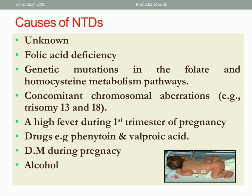Causes of neural tube defects may be due to unknown cause, folic acid deficiency, or genetic mutations in the folate and homocysteine metabolism pathways, concomitant chromosomal abnormalities like trisomy 13 and 18, high fever during the first trimester of pregnancy, drugs like phenytoin or valproic acid, antiplastic drugs, diabetes mellitus during pregnancy, and alcohol.